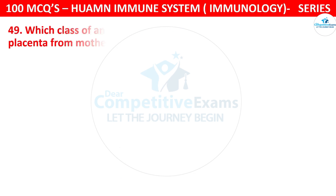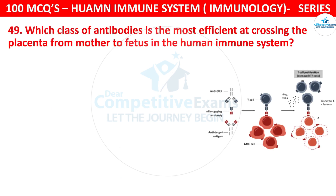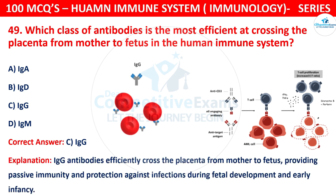Question number 49. Which class of antibodies is the most efficient at crossing the placenta from mother to fetus in the human immune system? The options are IgA, IgD, IgG, or IgM. The correct answer is C, that is IgG. IgG antibodies efficiently cross the placenta from mother to fetus, providing passive immunity and protection against infections during fetal development and early infancy.